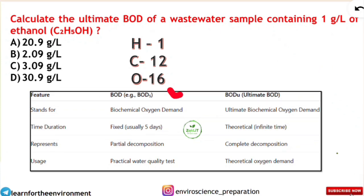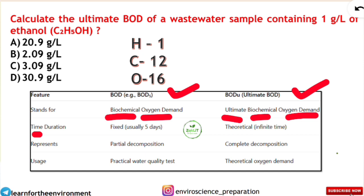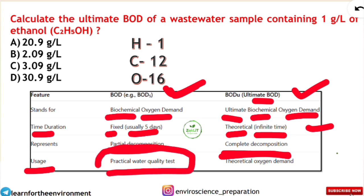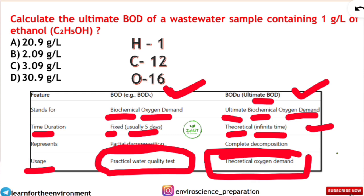There is one more important tip: the difference between normal BOD and ultimate BOD. Normal BOD is called BOD5 — measured after 5 days of incubation, it represents partial decomposition of organic matter and is a practical water quality test. Ultimate BOD (BOD-u) is theoretical, measured over infinite time, representing complete decomposition of all organic matter. BOD5 is experimental; ultimate BOD is the theoretical oxygen demand.